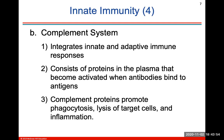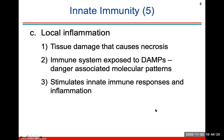The complement system integrates innate and adaptive immune responses. It consists of proteins in your plasma that become activated when antibodies bind to antigens. The complement proteins will promote phagocytosis — the engulfing of anything foreign — the lysis of target cells, which is the splitting open of the targeted cell, and also the inflammation response. Local inflammation will cause tissue damage, leading to necrosis or scarring of that tissue. The immune system will also be exposed to danger-associated molecular patterns, which stimulate innate immune responses and inflammation.